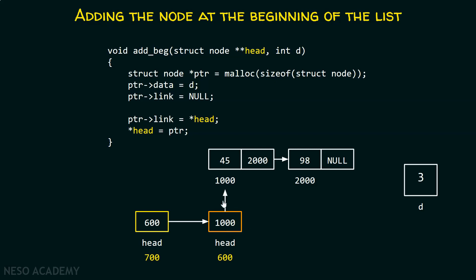Which means we need another pointer which is a pointer to some other pointer, because we want to update this head which is the head of the main function. That is why another pointer is required to store the address of this head. With the help of this pointer, which is local to this function, we will be able to make changes in the head of the main function, because we have the address of this particular pointer, head. This head is local to this function, and this head is of the main function — we will make changes in this head.